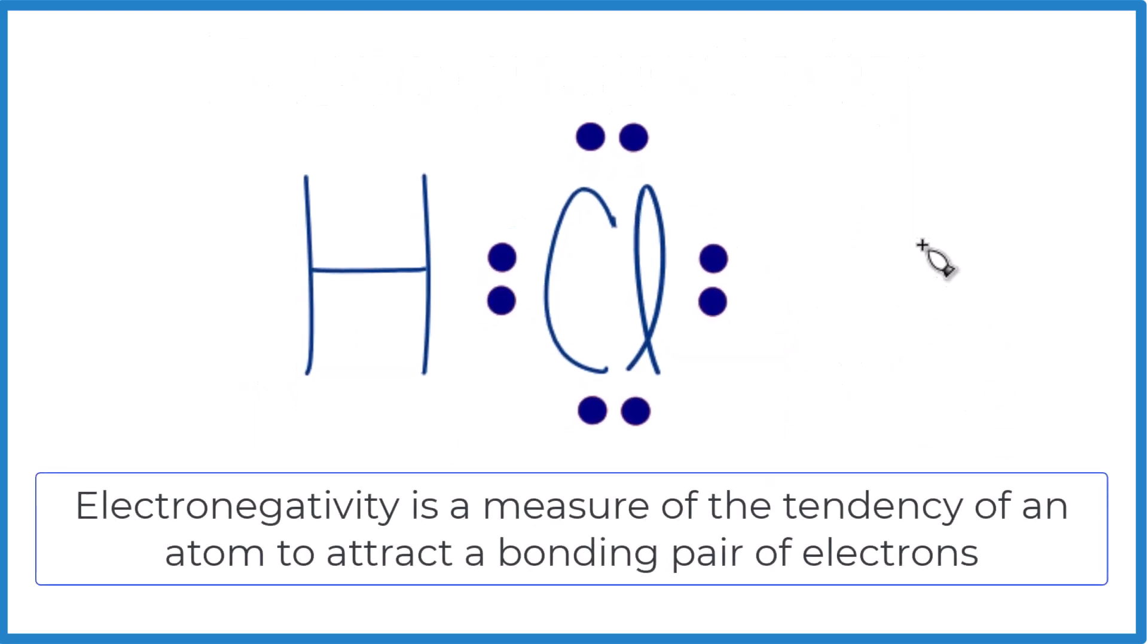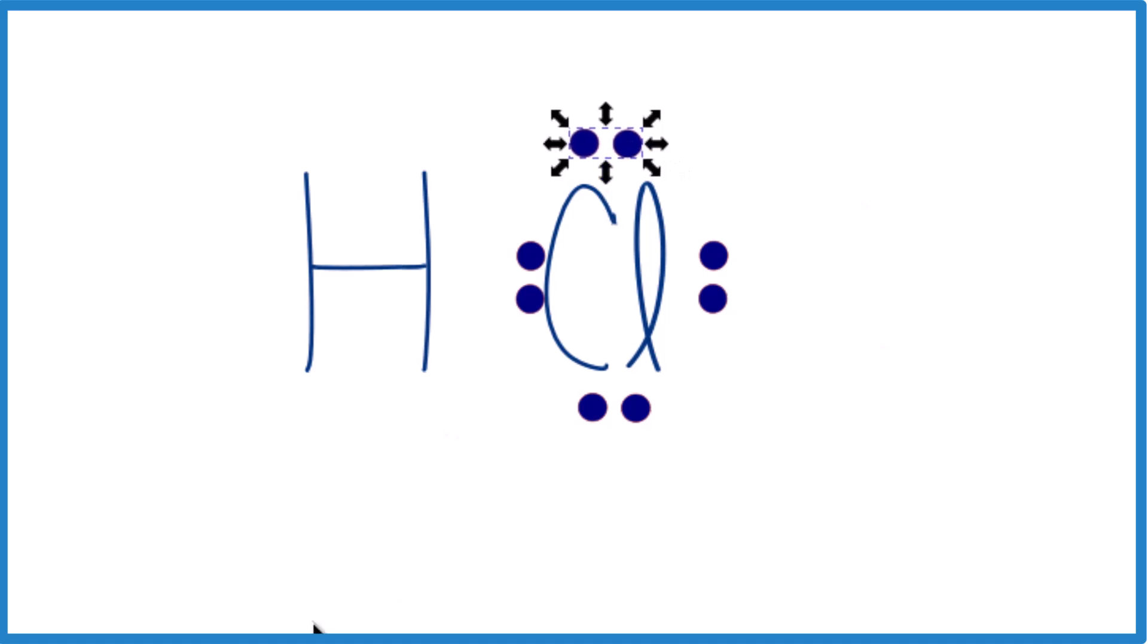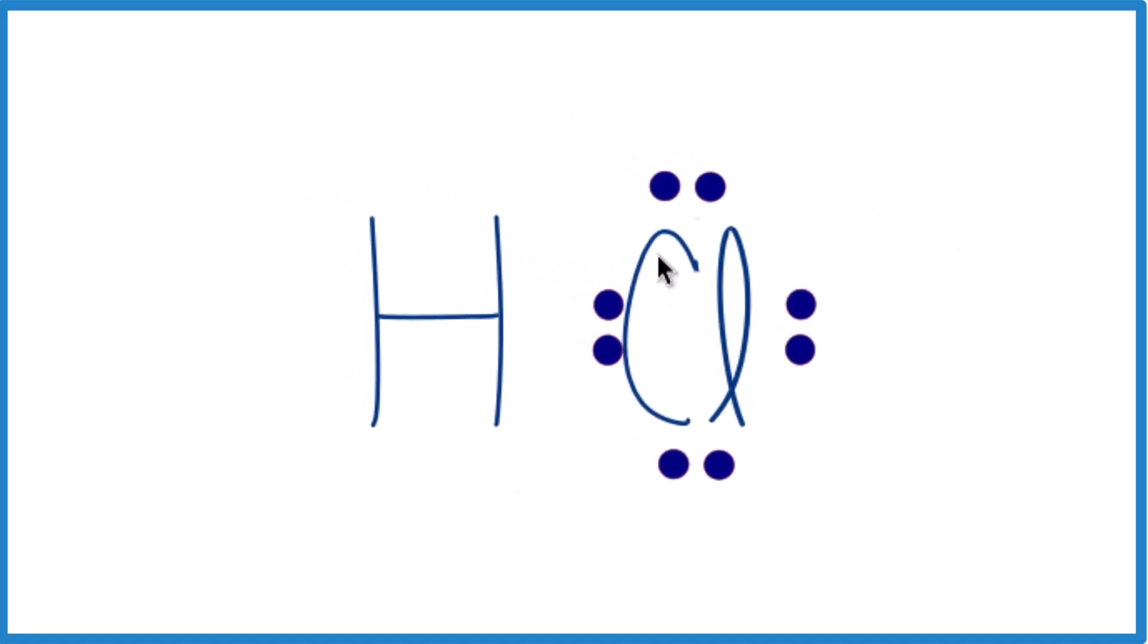When we're talking about electronegativity of an element, let's say chlorine, chlorine's more electronegative than hydrogen. What that means is it's going to pull the electrons in the chemical bond closer to it. We're interested in the electrons involved in the bond between atoms. We don't really care about the lone pairs. Because electrons are negative, there'll be more electrons around chlorine. It'll be a little bit more negative, have a partial negative charge. Hydrogen will have a partial positive charge.